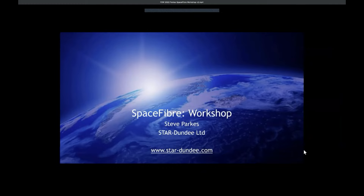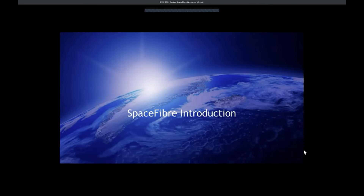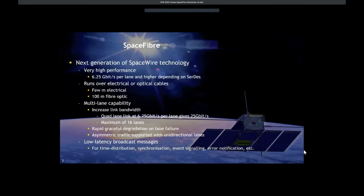First, a brief introduction to Space Fiber. Space Fiber is the next generation of SpaceWire technology, which is very high performance. It runs at 6.25 gigabits per second per lane and higher depending on the SERDES speed. It runs over electrical or fiber optic cables. Over electrical cables it will run a few meters at 6.25 gigabits per second, and Space Fiber operates over 100 meters of fiber optic cable.